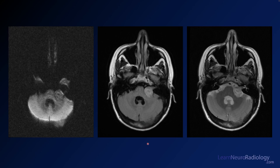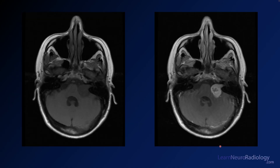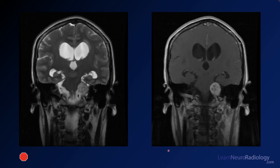Here we have a couple of images through the level of the pons. It can be hard to tell what type of images you're looking at when you're looking through the posterior fossa, but this is a diffusion image, a FLAIR, and a T2-weighted image. We also have a pre-contrast T1 and a post-contrast T1-weighted image, as well as coronal images — a coronal T2 on the left and a coronal post-contrast on the right.